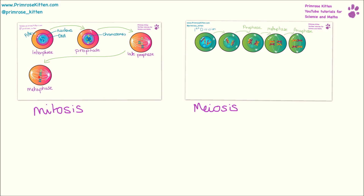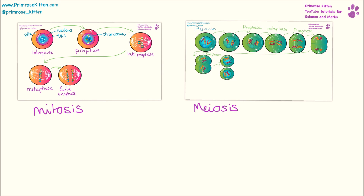It is crucially important in biology that you remember the spellings and the differences between meiosis and mitosis. I have seen beautifully written six-mark answers getting absolutely no marks because they forgot to put a T in mitosis, which makes it impossible for the examiner to understand whether you're talking about meiosis or mitosis. Mitosis has a T in it, which means it goes into two cells. Meiosis does not have a T, so it goes into four cells.